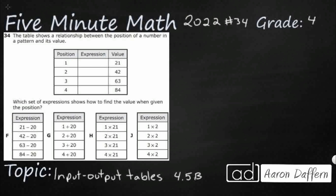So we have a table here that shows a relationship. That relationship shows up in this expression between the position of a number in a pattern and its value. The positions are first, second, third, and fourth, and the values get bigger: 21, 42, 63, 84.